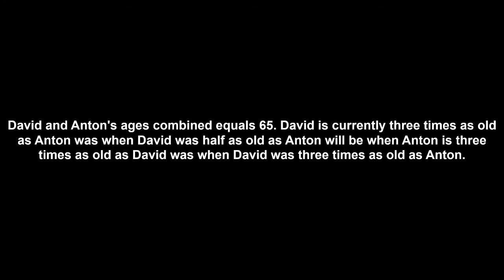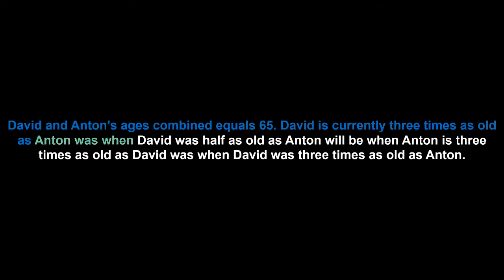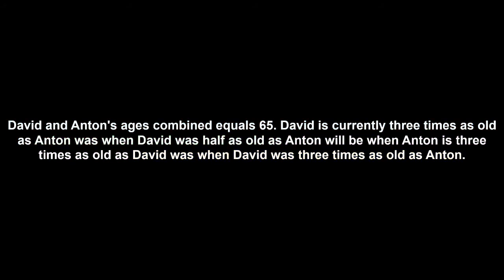David and Anton's ages combined equals 65. David is currently three times as old as Anton was when David was half as old as Anton will be when Anton is three times as old as David was when David was three times as old as Anton. You can see by the colouring of the text that there are four different time frames referred to, which is what makes this puzzle more complicated than normal age puzzles.